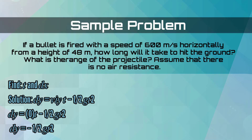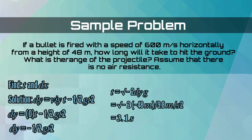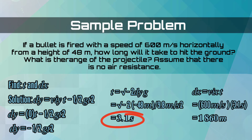Now let us try to find the time and the dx. To compute for the time, we have the square root of negative 2dy over the acceleration due to gravity. So we have the square root of negative 2 multiplied by negative 48 meters divided by 9.8 meters per second squared. So our time will be 3.1 seconds. To compute for dx, we will use the equation dx = vix multiplied by time. So in our given, vix is 600 meters per second, and time is 3.1 seconds. So 600 multiplied by 3.1 gives us 1,860 meters.